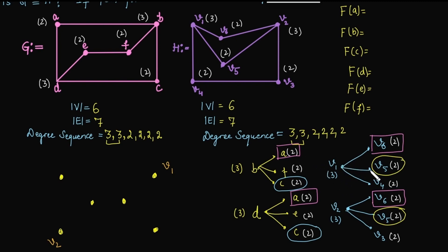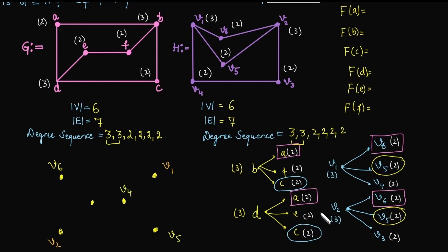We choose the mapping: A with V6, and C with V5. With this, in vertex B, one vertex F remains unmapped, and V1 still has V4 unmapped, so we map F with V4. For vertex D, vertex E is the remaining unmapped vertex, and for V2, V3 is unmapped, so we map E with V3.